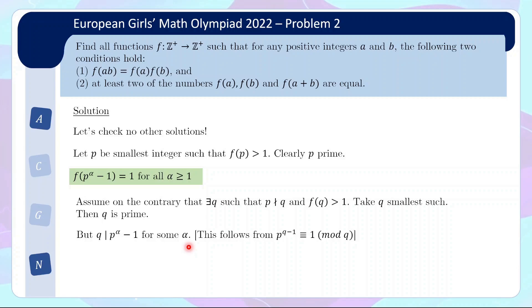And this actually follows from our favorite number theory theorem, which is Fermat's Little Theorem. So p to the q minus 1 will be congruent with 1 mod q, so q will basically divide p to the q minus 1 minus 1. This is clearly a contradiction because f(q) is bigger than 1, so f(p to the alpha minus 1) will be bigger than 1, but then we just showed that it is all equal to 1.